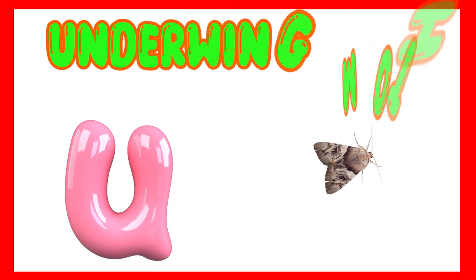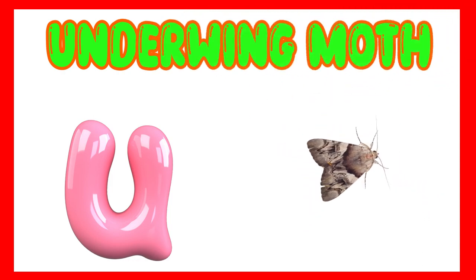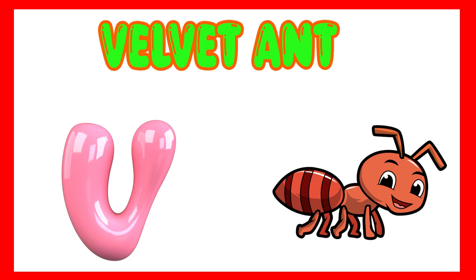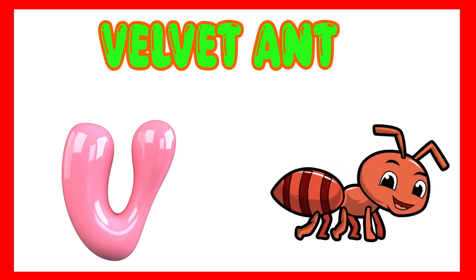U is for underwing moth. Uh, underwing moth. V is for velvet ant. V, velvet ant.